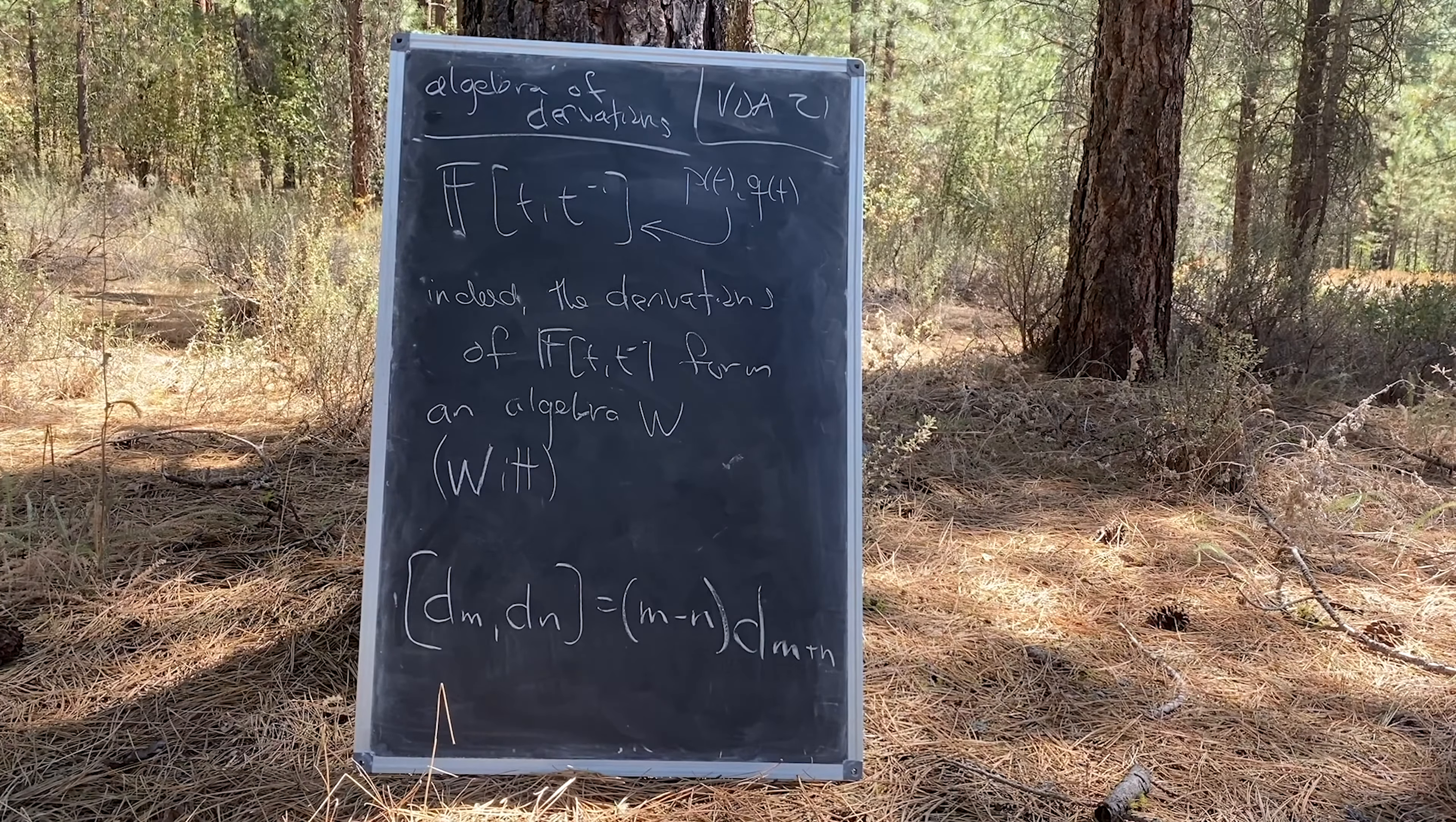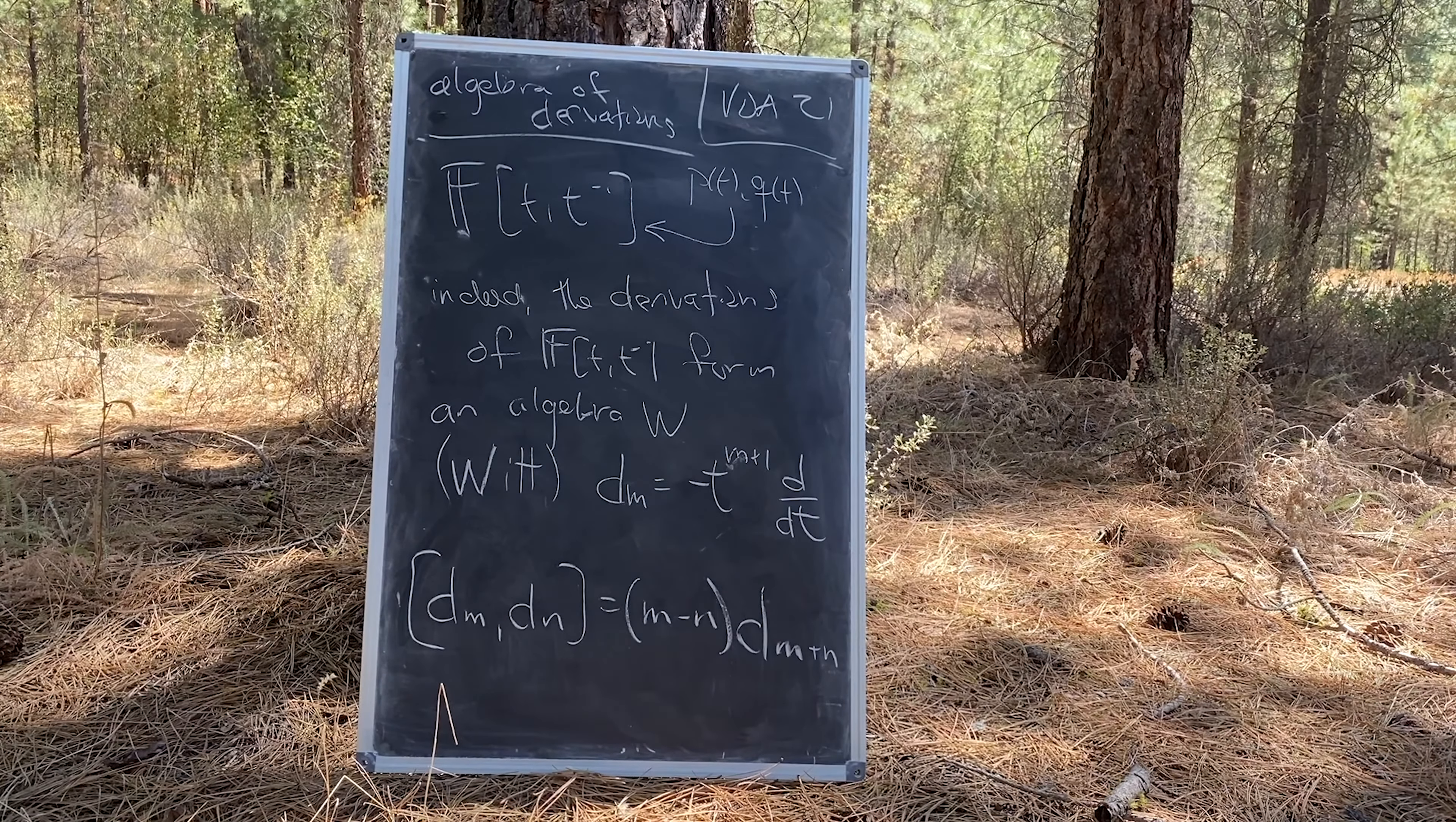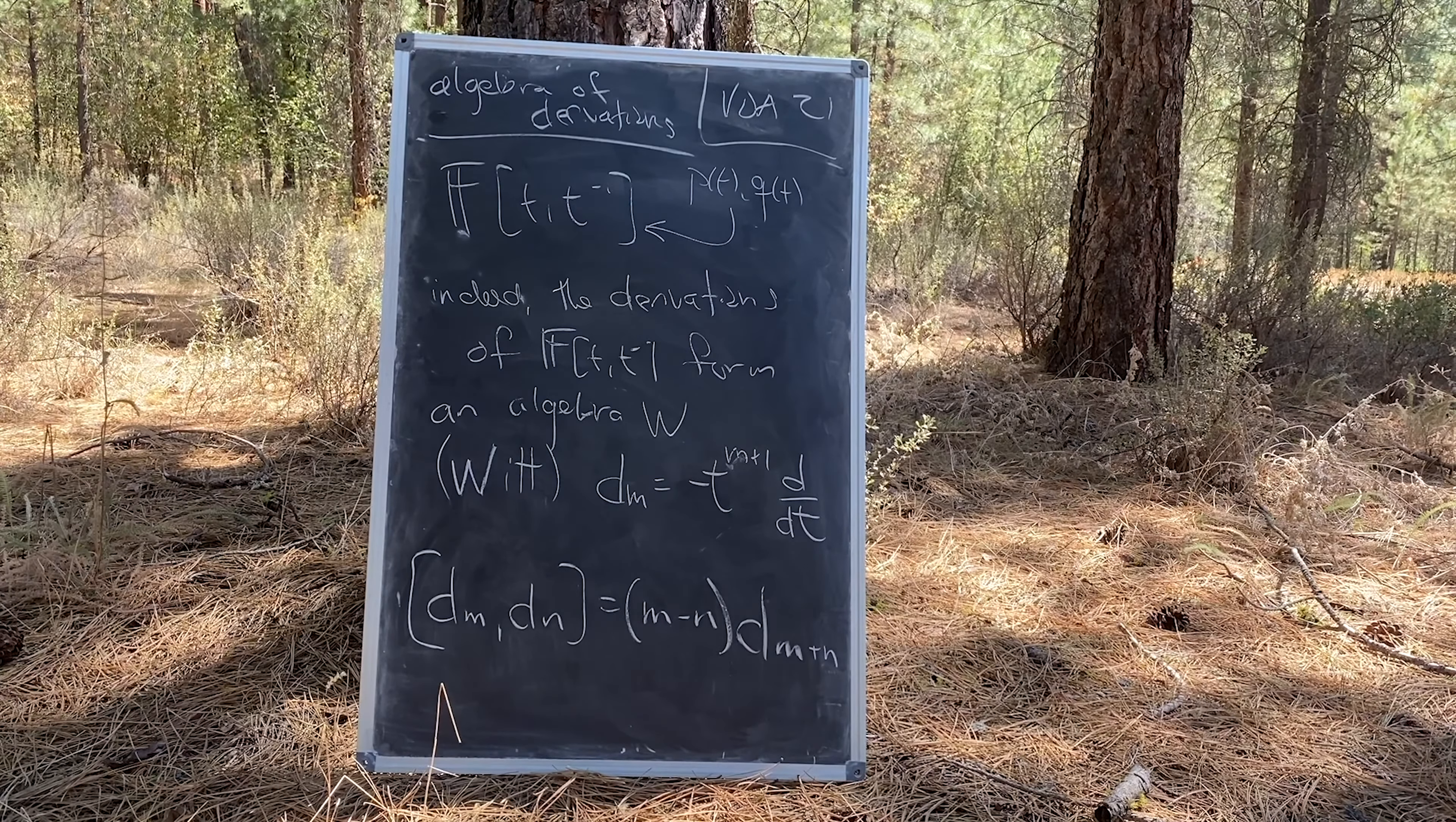Taking a basis for this algebra in terms of the monomials, we find a simple bracket relating dm and dn to dm plus n, where of course m and n are integers.